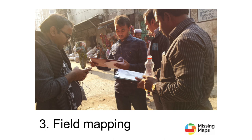The third pillar is what we call field mapping. This is where teams on the ground will verify and add additional useful information like street names and building qualifiers. For this demo, I'd like to focus on the second part of mapping, which is done through the Humanitarian OpenStreetMap Tasking Manager site, and this is where most of the magic happens.